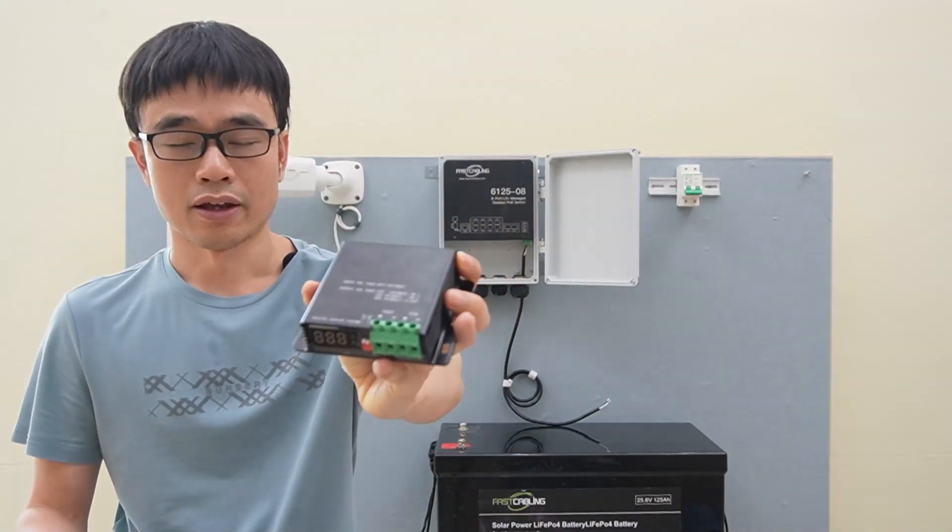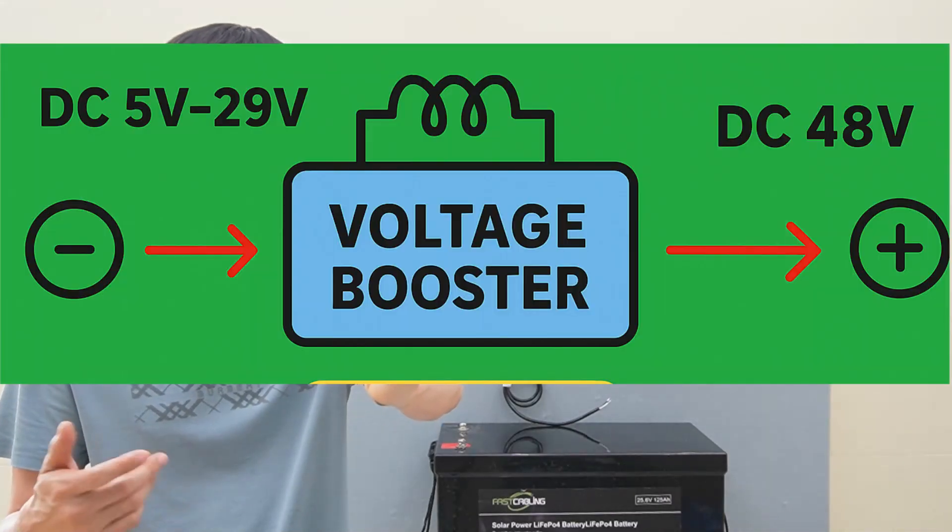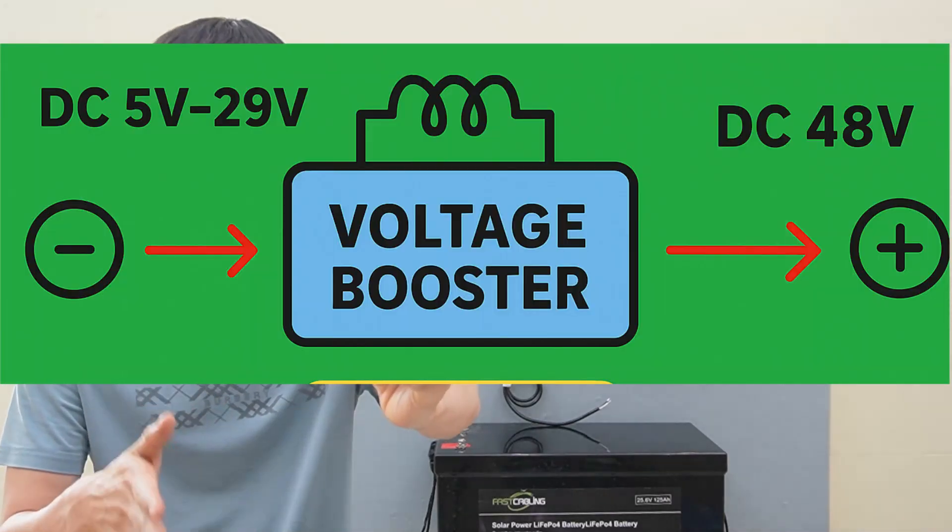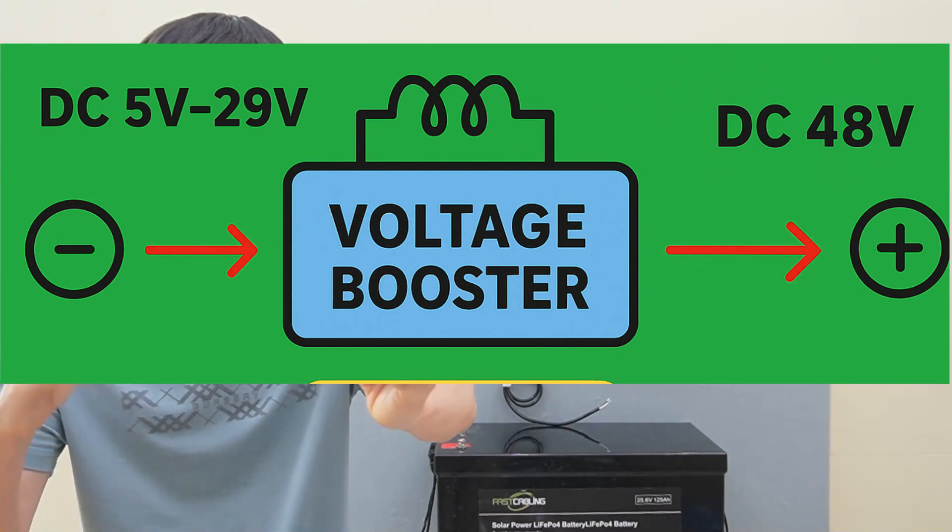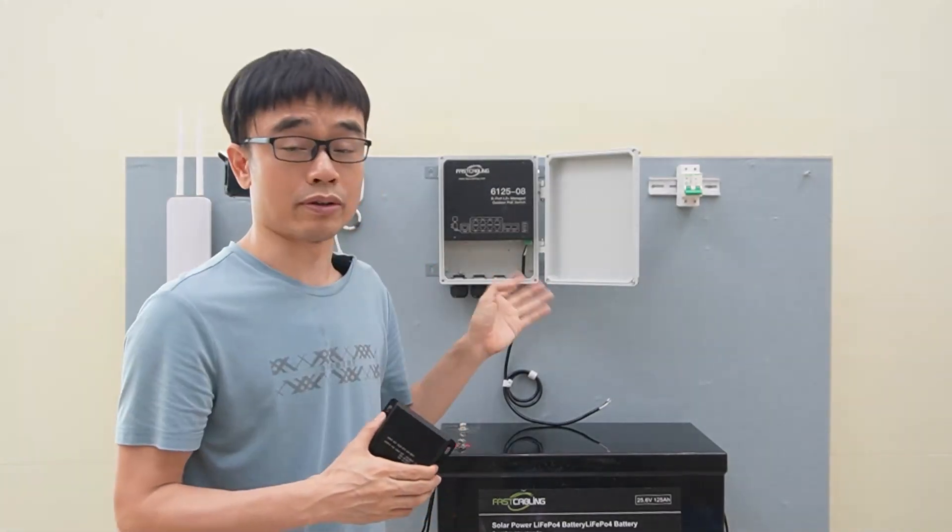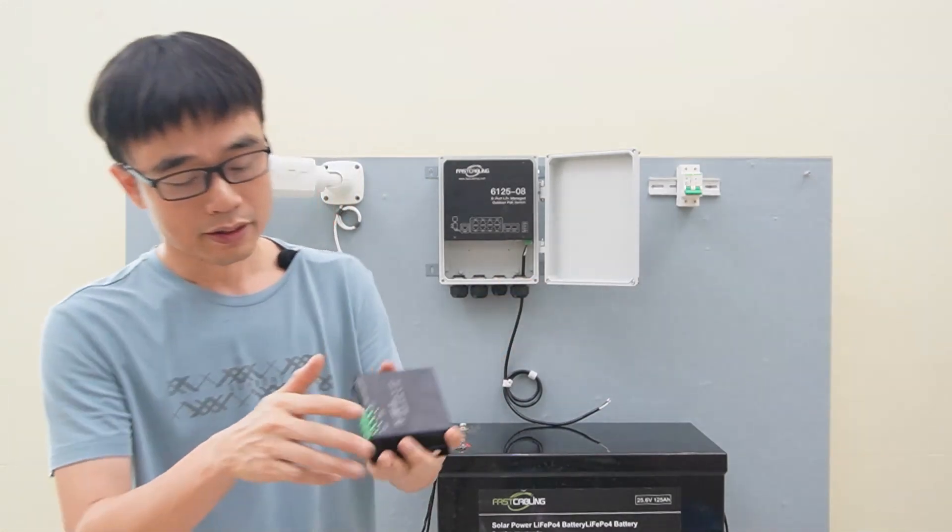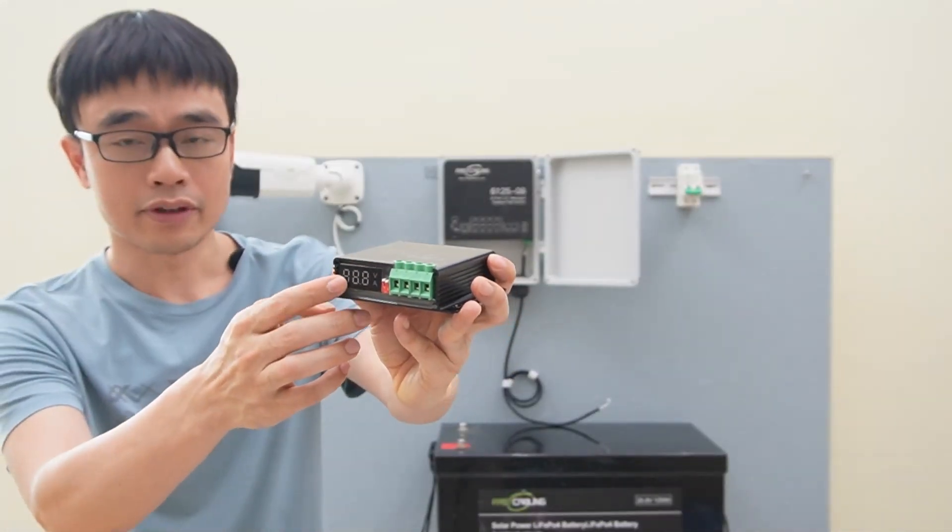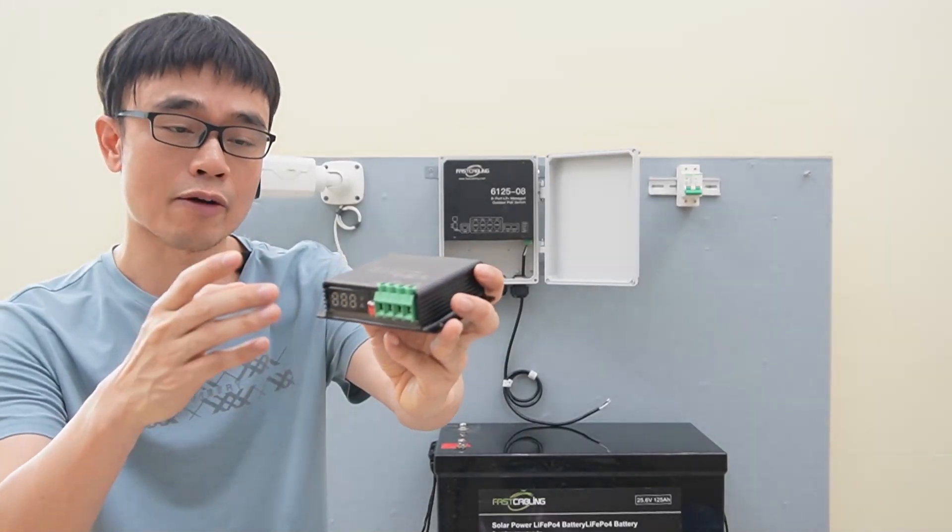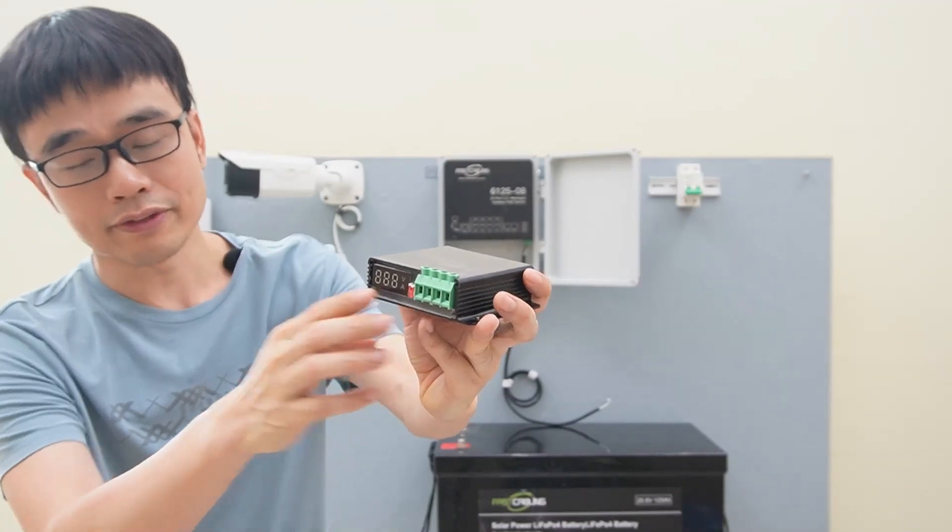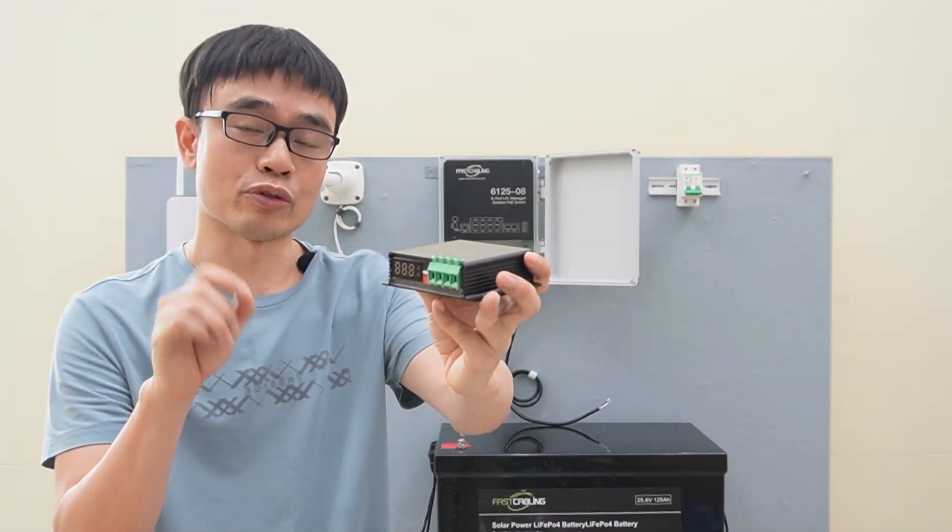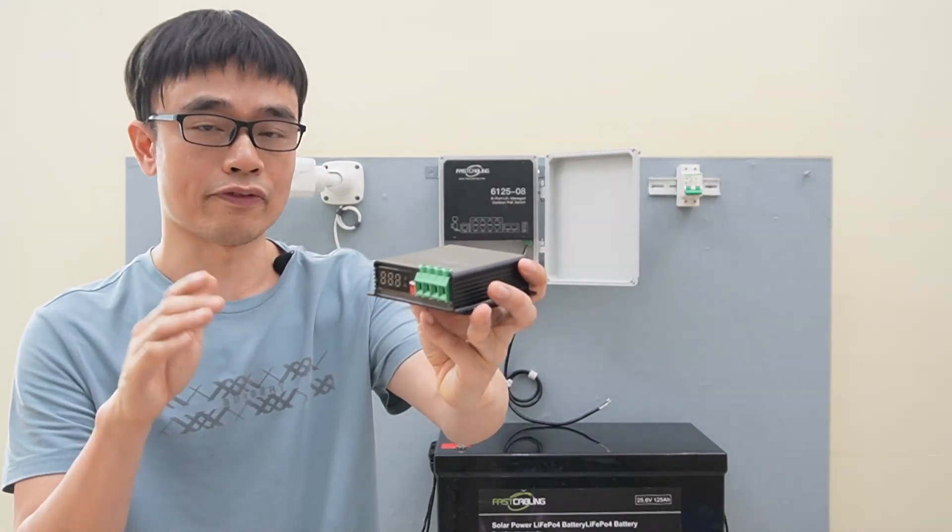We need another device called a voltage booster. The voltage booster accepts voltage input between DC 5V to DC 29V, and it will boost up the voltage output to DC 48V, which is the correct voltage for standard PoE. This is the digital plate. It will show the current voltage output passing through this booster. And we have a setting which allows us to adjust the voltage output. We can set the output to DC 54V.